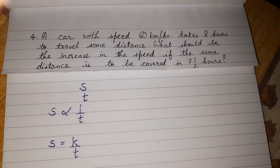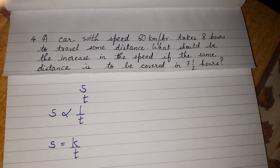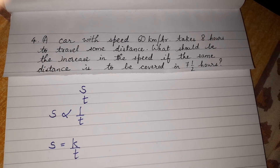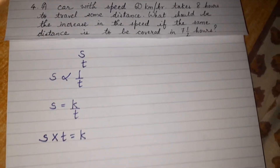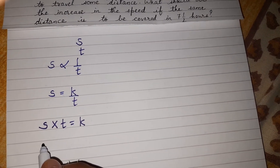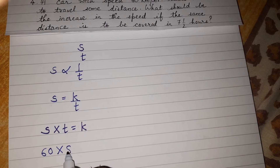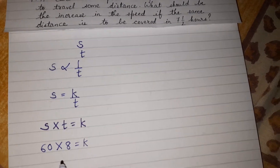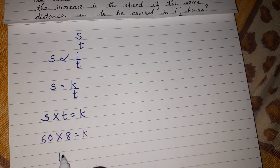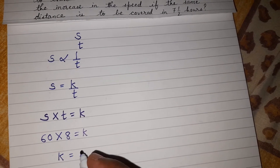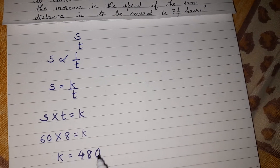Now we put the values as given in the problem — speed is 60 kilometers per hour and the time taken is 8 hours. So 60 multiplied by 8 gives us 480. The constant of proportion k is 480.